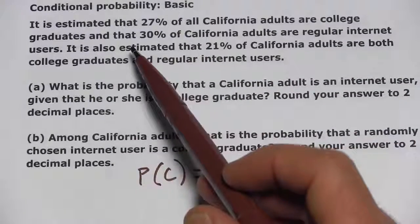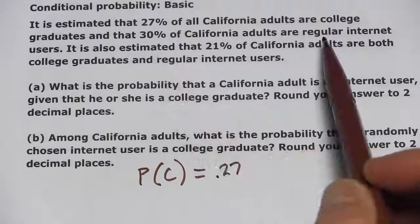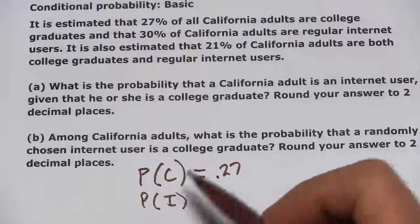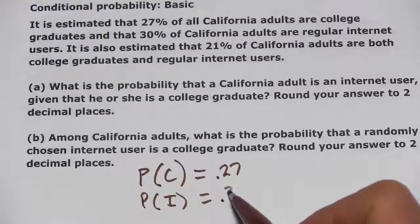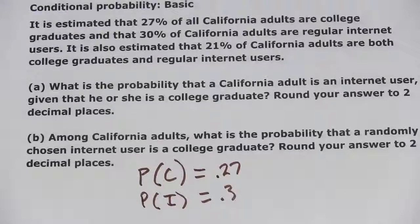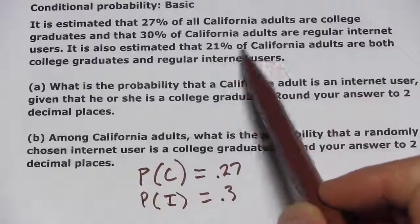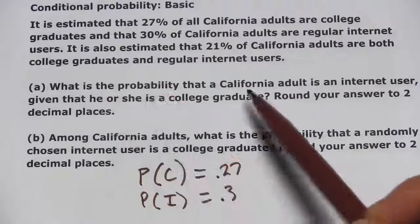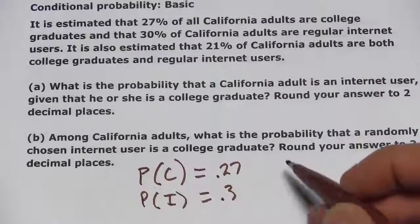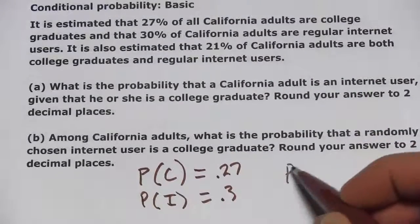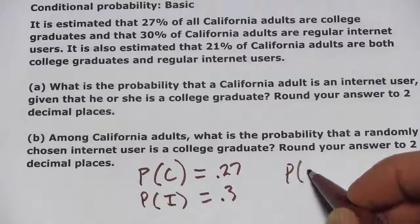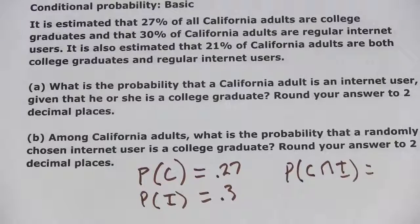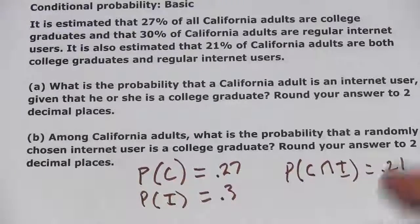We also have the probability that they use the internet regularly, so we'll call that P of I, and that is 30% or 0.3. And we also have the intersection — 21% are both college graduates and regular internet users. We write the intersection like this: C intersection I, and that is 0.21.